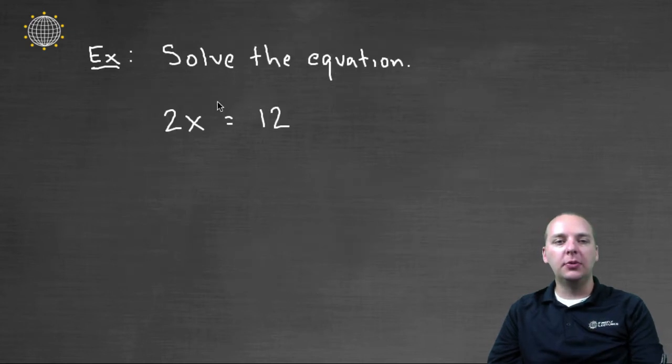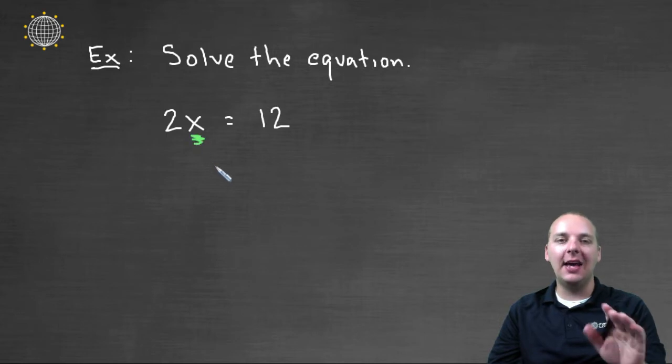So let's look at a few examples. So here we go. First example, they want us to solve the equation 2x equals 12. When they say solve, what they mean is isolate the x, get the x by itself.